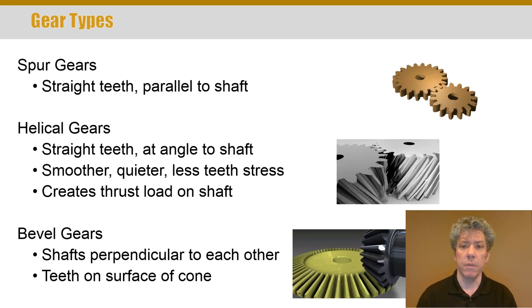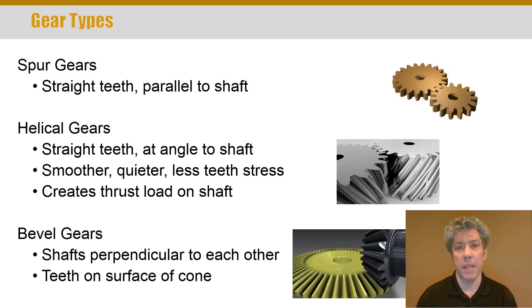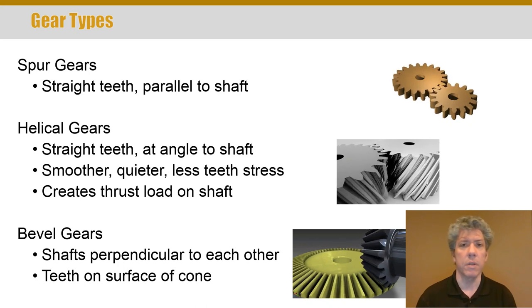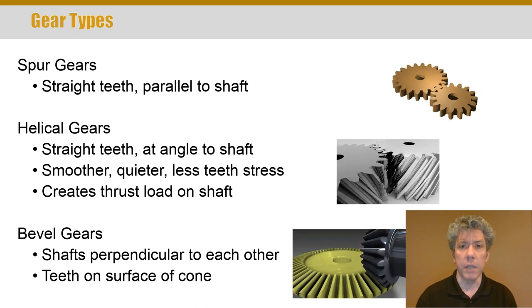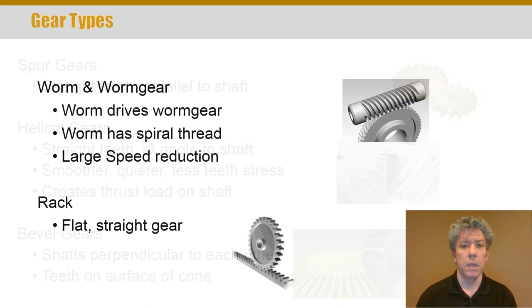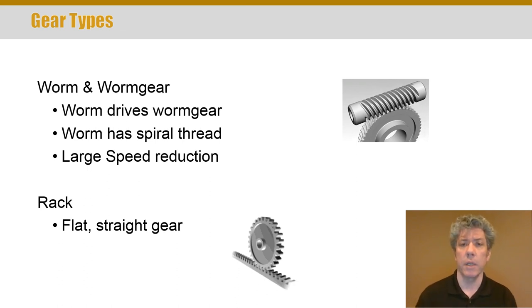Bevel gears are a little bit different. You see those at the bottom — typically the shafts are perpendicular to each other, though that doesn't have to be the case. The teeth are on the surface of a cone. The typical application for bevel gears is to turn a corner, to make the shaft change angle, and you typically also include some gear reduction in that process, because prime movers often move fairly fast with low torque and you need relatively high torque, so you reduce the speed.